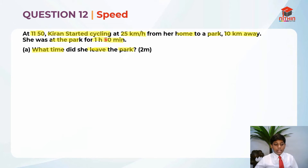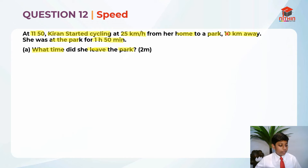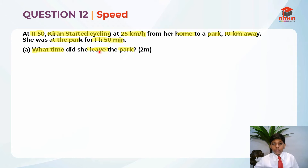So let's identify what they want. At 11:50, Kiran started cycling at 25 km per hour from home to the park, covering 10 km. She was at the park for 1 hour and 50 minutes, and after that time she left the park.